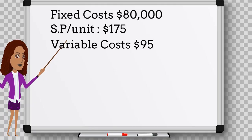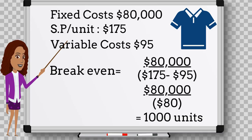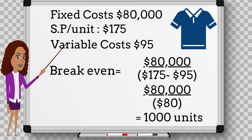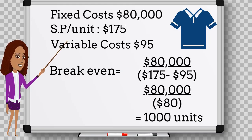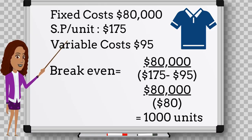Let's say the fixed cost for a t-shirt factory amounts to $88,000. If each t-shirt is sold for $175 and the variable costs to produce each t-shirt are $95, to calculate our break-even point we divide our fixed cost of $88,000 by our contribution margin of $175 minus $95, which equals $88. So we divide $88,000 by $88, giving us 1,000 units. Therefore, the factory must sell more than 1,000 jerseys to make a profit — anything less results in a loss.